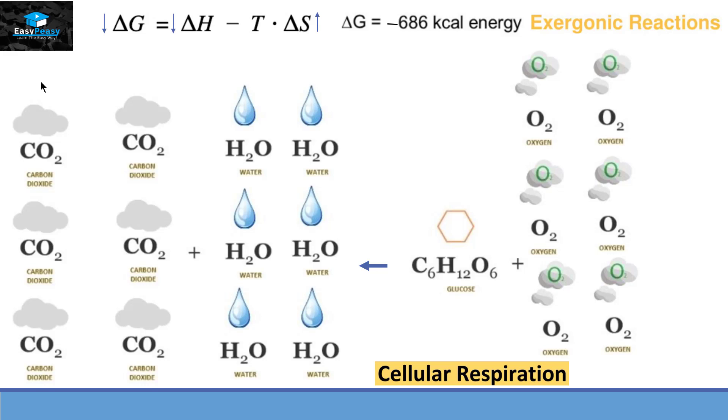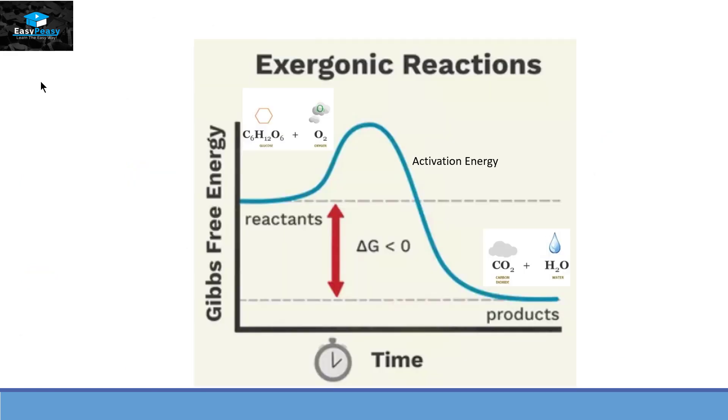Now, if we look at this reaction in the form of a graph, we can see that reactants have higher energy as compared to the products, and ΔG value is less than zero here. So this type of reaction is an exergonic reaction.